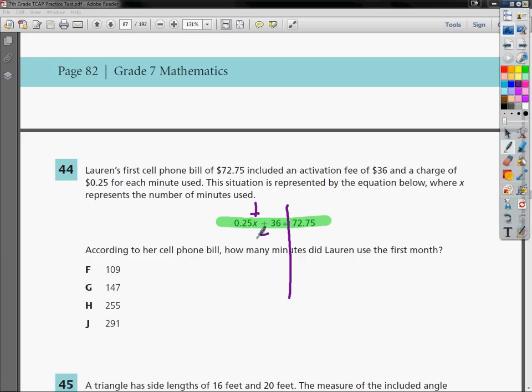In order to get rid of plus 36, I need to subtract and if I do it on one side I'm going to do it on the other as well. So the plus 36 minus 36, the reason I did it was to eliminate that term because 36 minus 36 is 0.